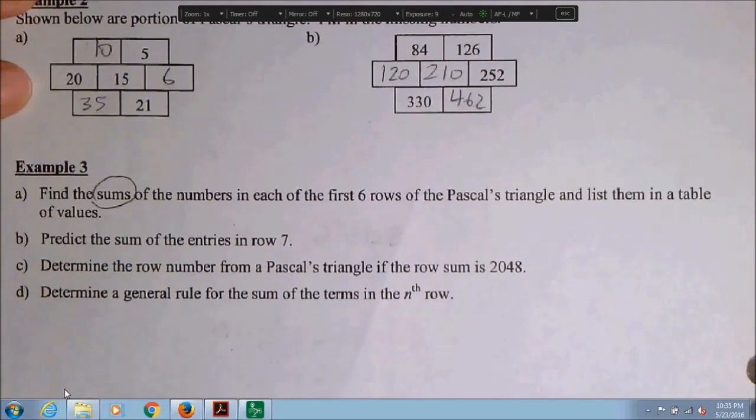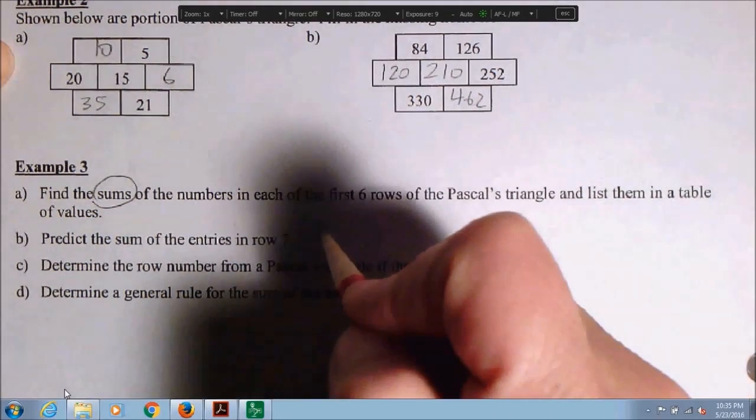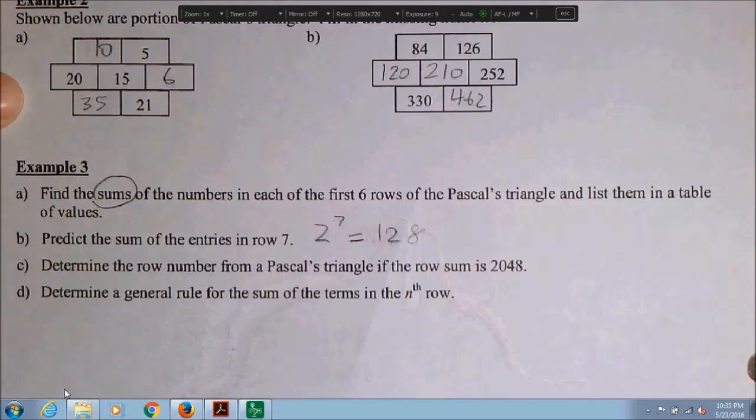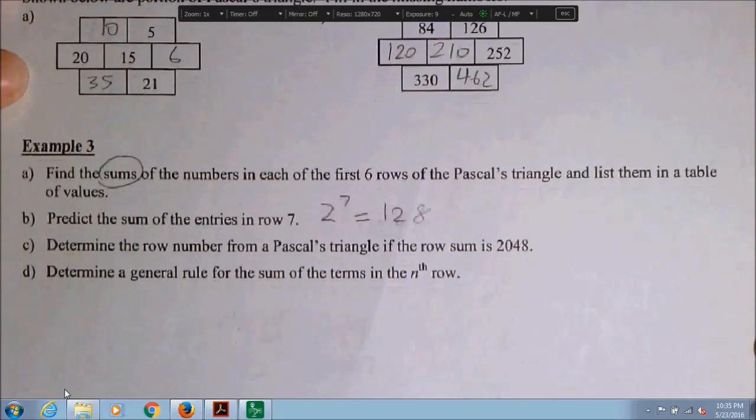Let's go down to example 3. Find the sums of the numbers. Okay. We did the table of values. So now predict the sum of the entries in row 7. Well, it looks like row 7 will have, the sum will be 2 to the 7, which is 128.